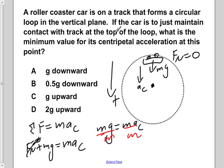which leaves us with mg equals ma centripetal. If we divide both sides by m, this shows that our centripetal acceleration has to be equal to the acceleration due to gravity. So our answer is A, g downward.